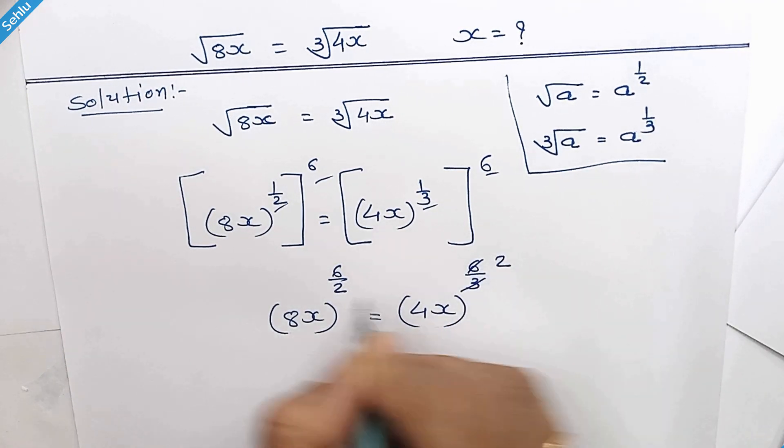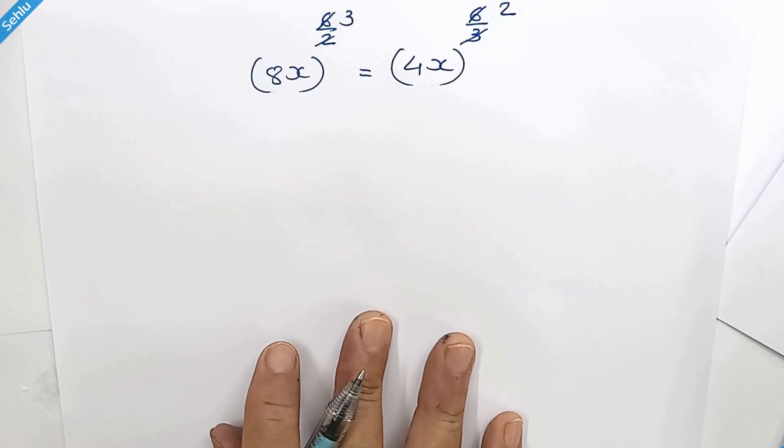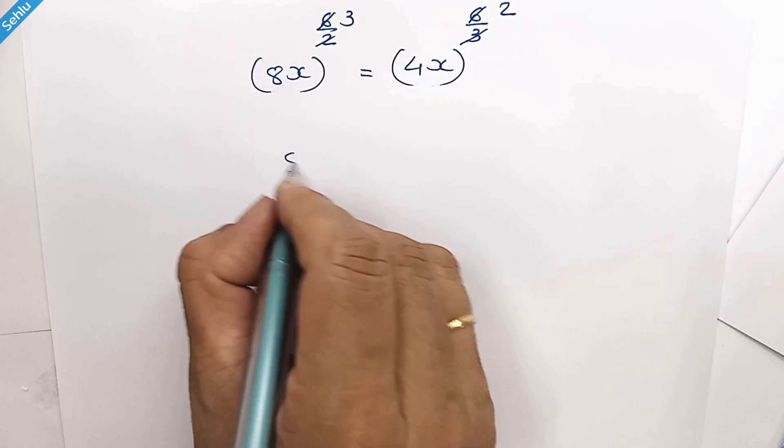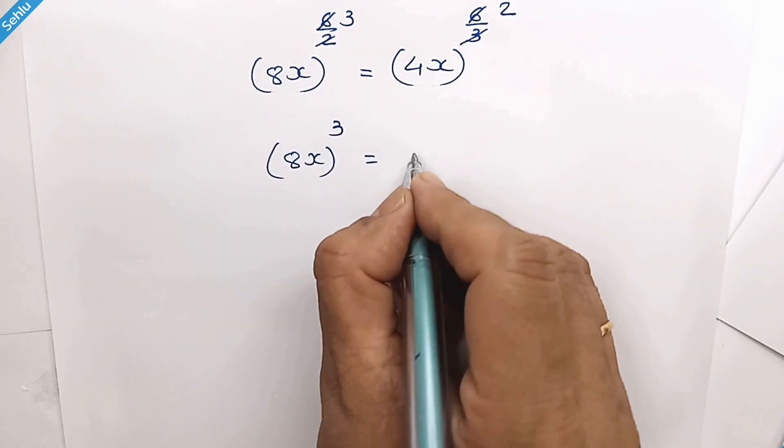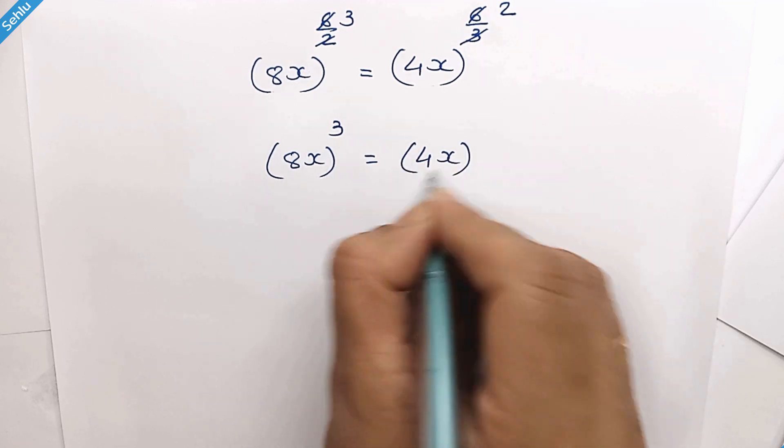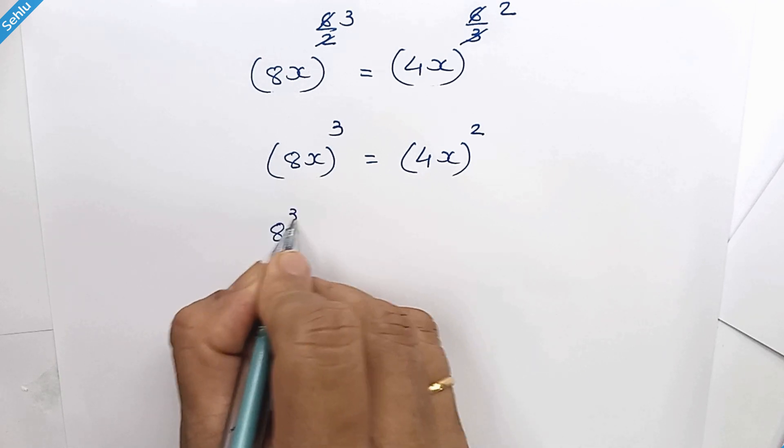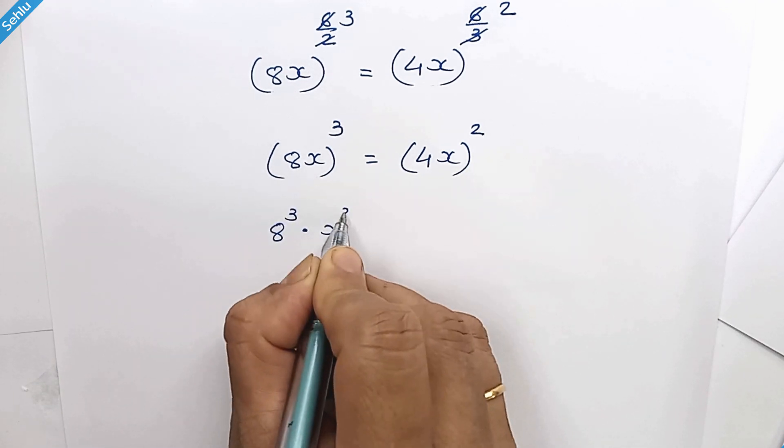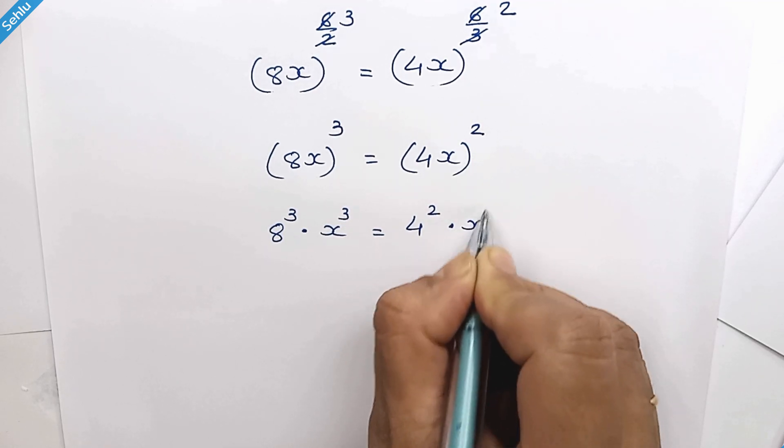Here we have 2 and here we have 3. Now we have 8x whole cube is equal to 4x whole square. Opening the brackets, so it will be 8 cube times x cube is equal to 4 square times x square.